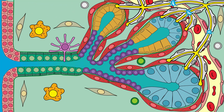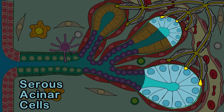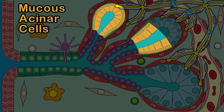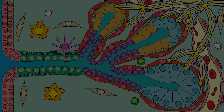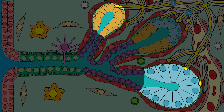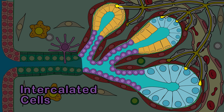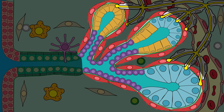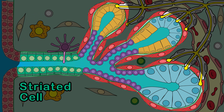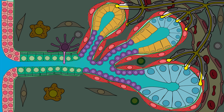Acini are composed of two different kinds of cells: serous acinar cells and mucous acinar cells, which secrete mucin proteins, giving saliva its viscous and sticky characteristics. The acini can be composed of serous cells, mucous cells, or a mixture of both. The secretory acinar lobes merge into intercalated ducts, which are lined by a simple low cuboidal epithelium and surrounded by myoepithelial cells. These ducts continue as striated ducts with a folded basal membrane to enable active transport and enhance the absorption of ions. The striated ducts lead into interlobular excretory ducts, which are lined with a tall columnar epithelium.